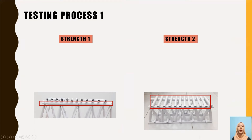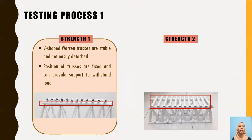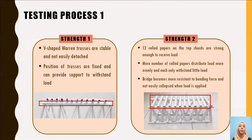For the strengths in Testing Process 1: the V-shaped Warren trusses are stable and not easily detached. The position of the trusses is fixed and provides support to withstand the applied load. Additionally, the 12 roller papers on the top chord are strong enough to bear the load. A greater number of roller papers distributes the load more evenly, so each one only withstands a small portion of the load, making the bridge more resistant to bending force and less likely to collapse when a load is applied.